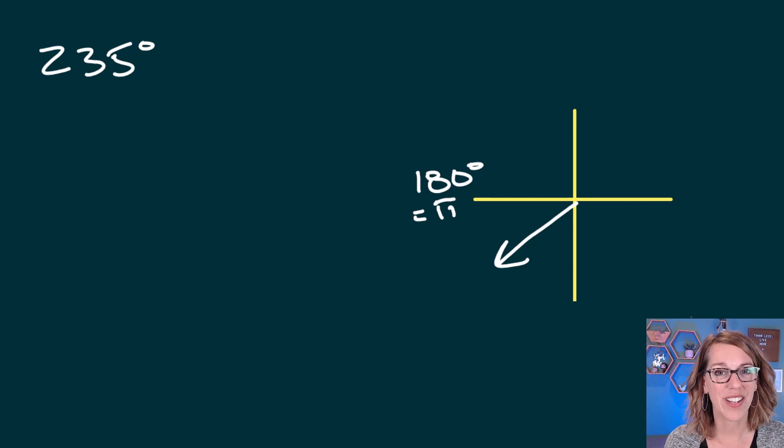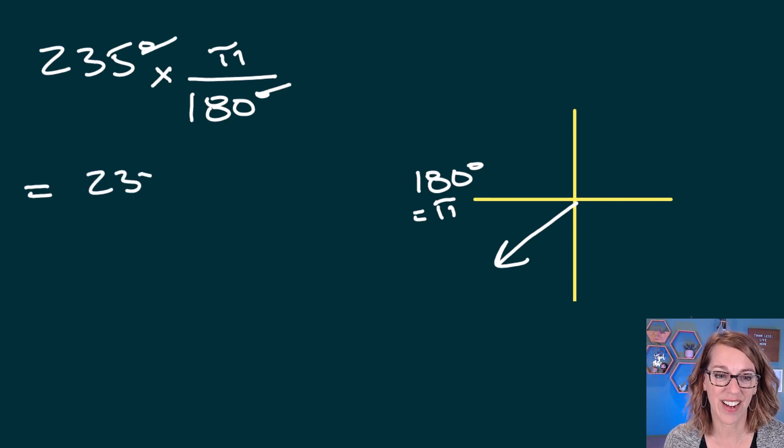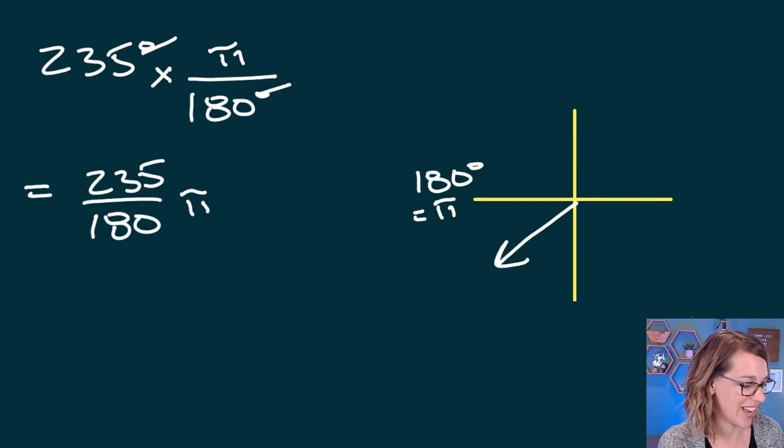Now I know that I want to cancel degrees. So as I'm picking a conversion factor, I want 180 degrees to be in my denominator and π to be in my numerator. This is going to cancel the degrees. In my calculator, I'm going to do 235 divided by 180, and I'm going to pull the π off to the side.